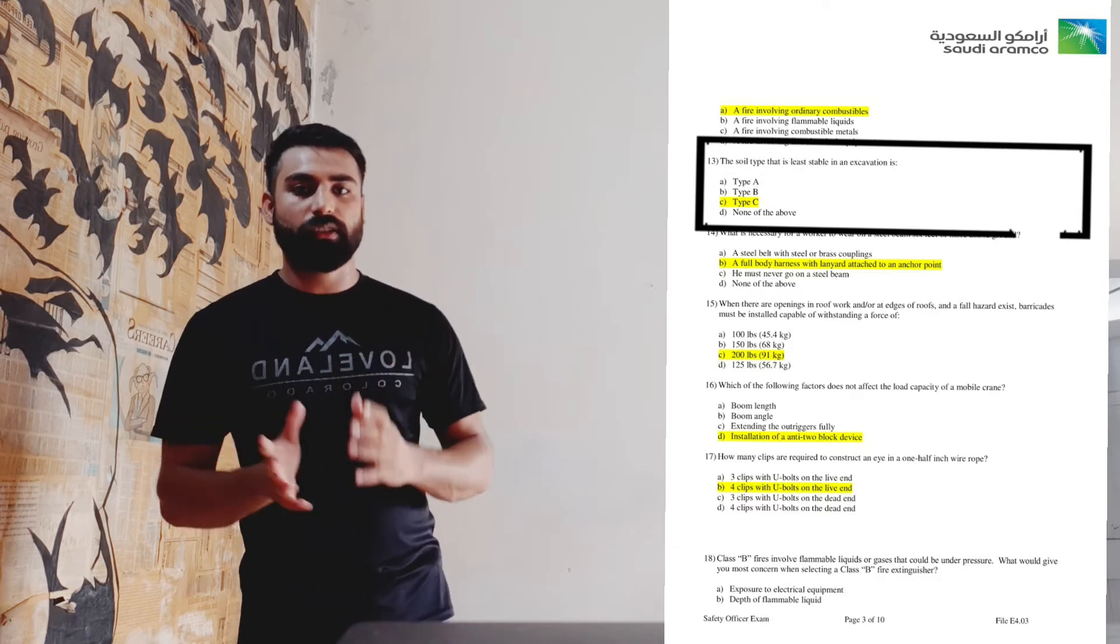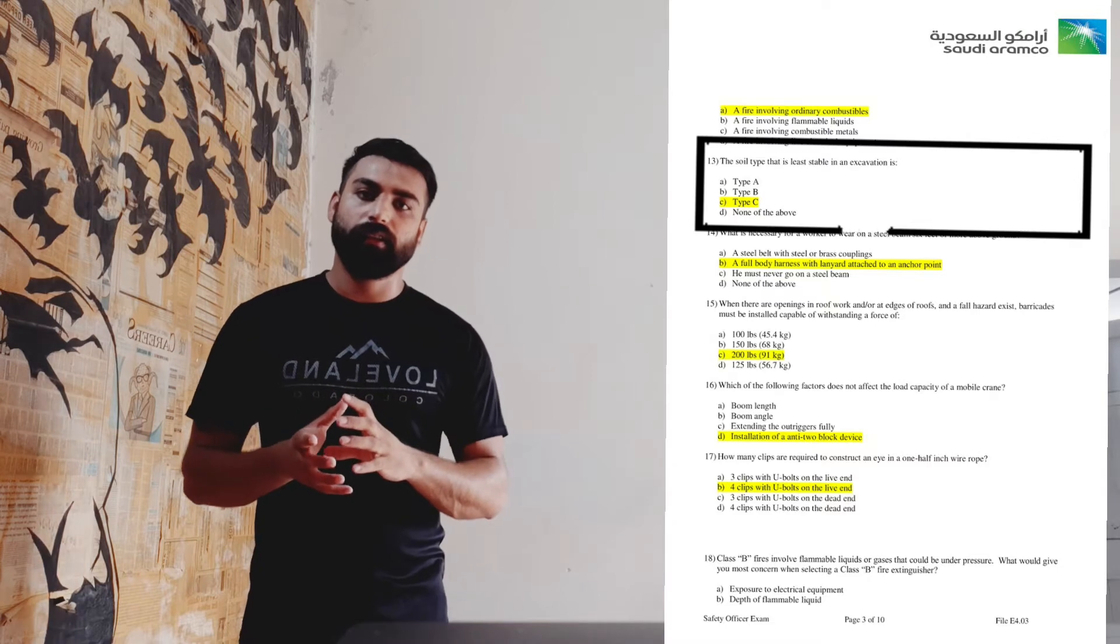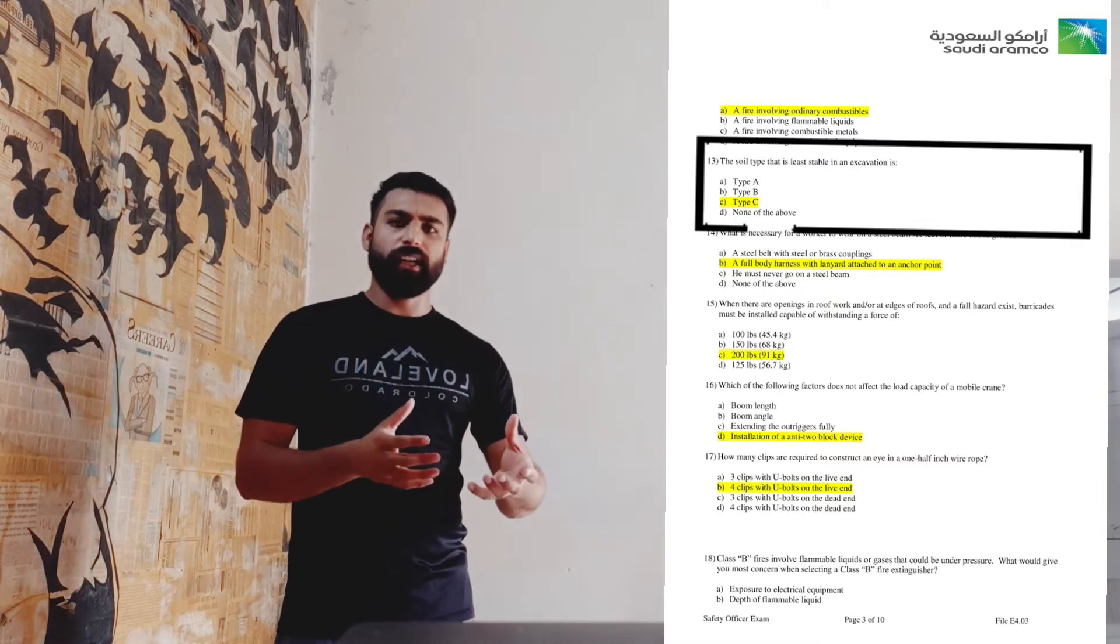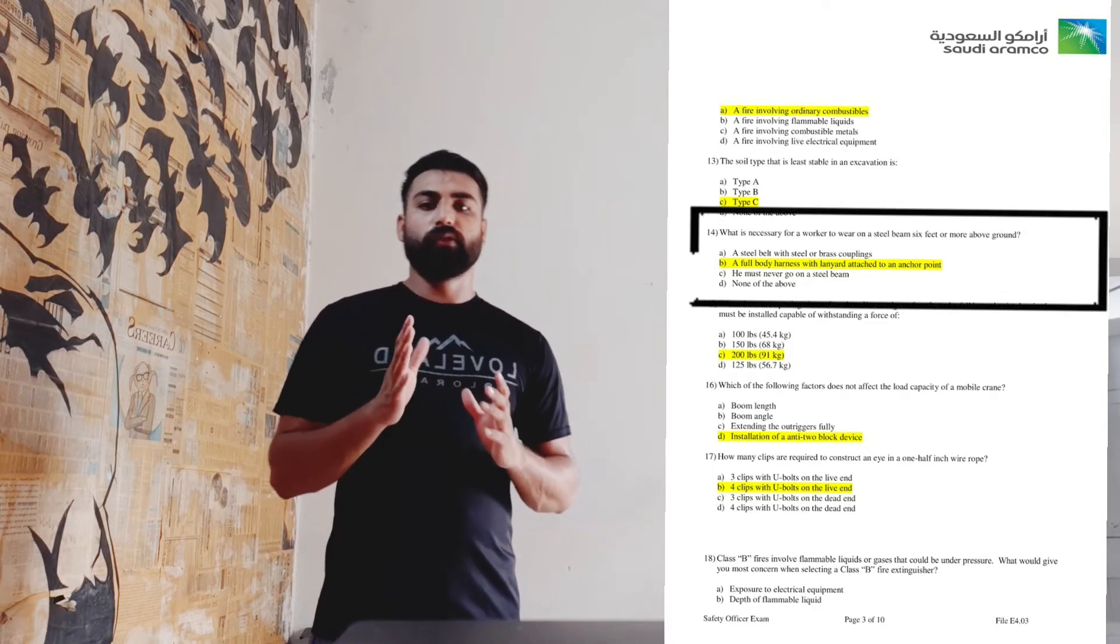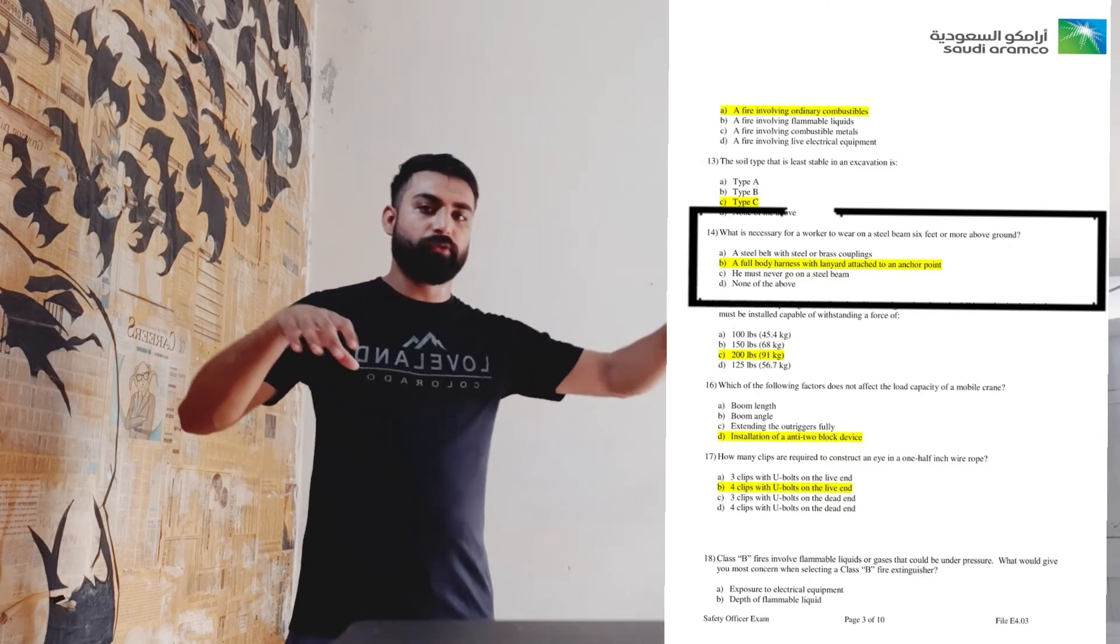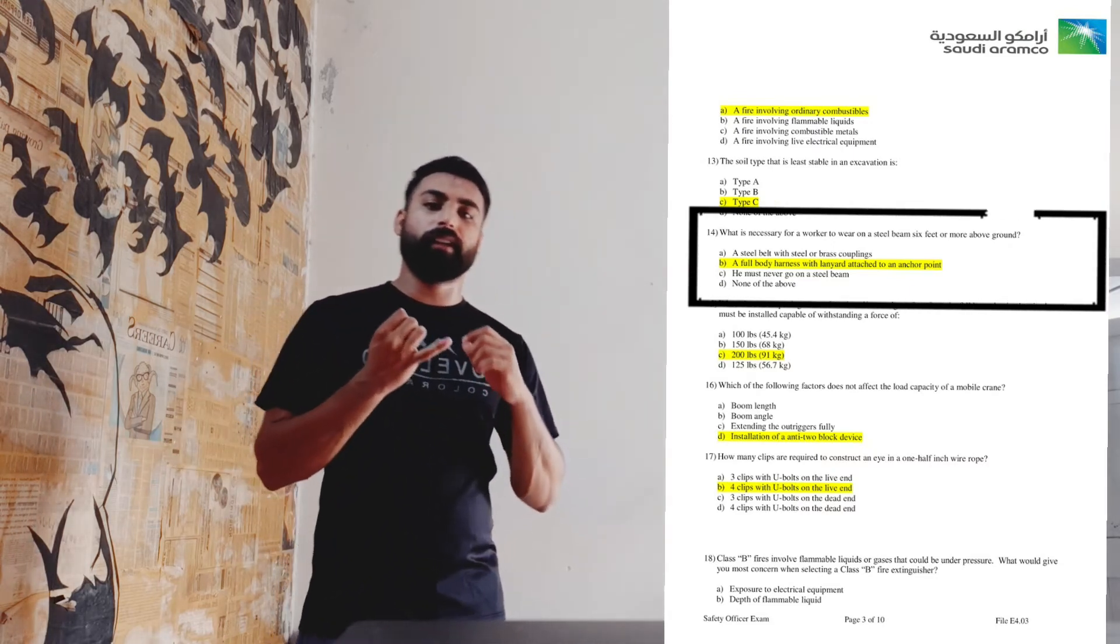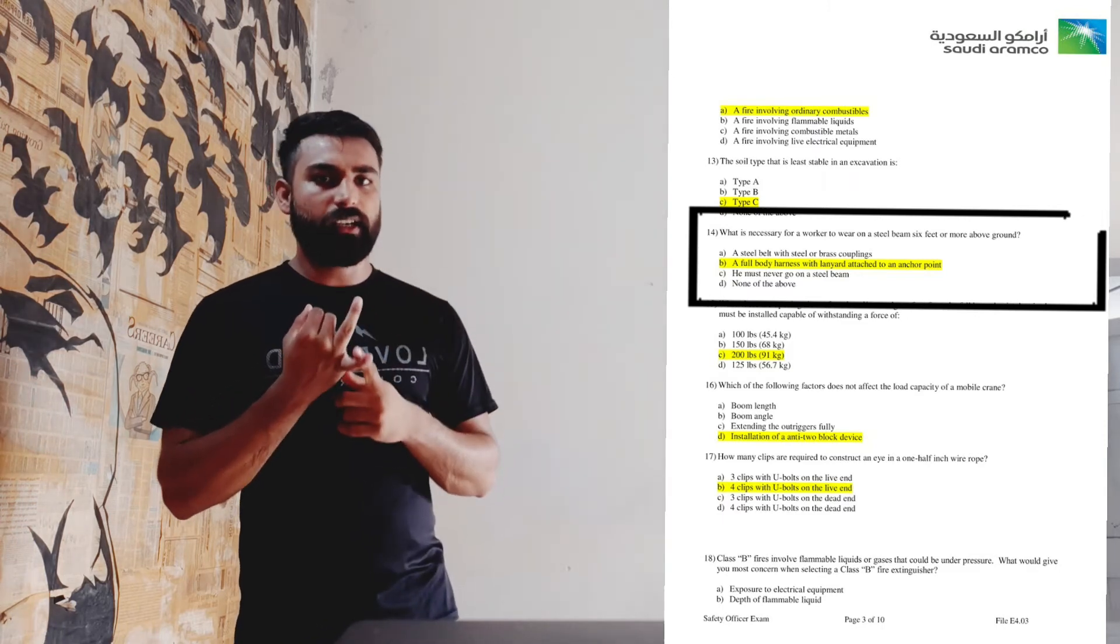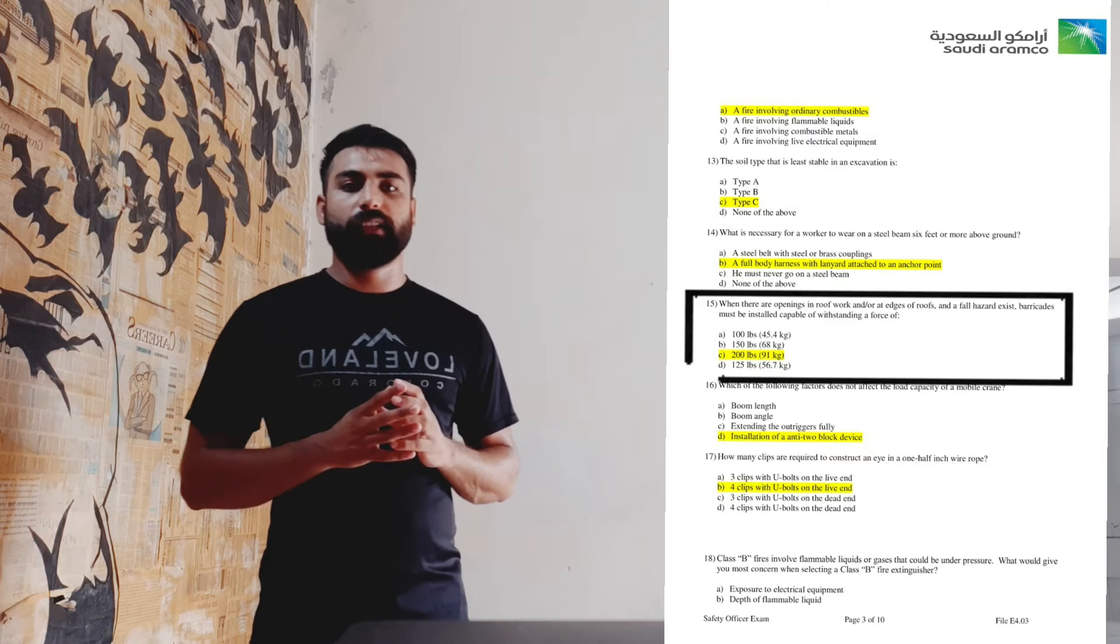Questions 14 and 15 are regarding work at height. In question number 14, they are asking if someone is working on a beam, like if we have to work on a beam about six feet height, what we should be having. We should be having a harness belt anchored with a specific anchorage point.